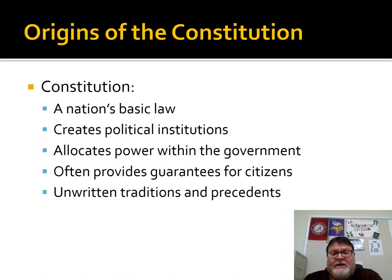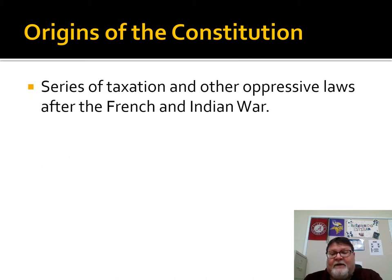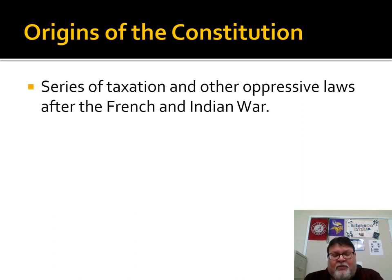A Constitution can also have unwritten traditions and precedents. If you look at Great Britain, part of their constitution is unwritten — it relies on traditions dating back 1,000 years or so. The lead-up to the revolution, which most of this is from U.S. history, involves a series of taxation and other oppressive laws after the French and Indian War — things like the Stamp Act, the Tea Act, the Intolerable Acts — that lead up to 1776.